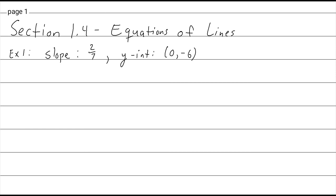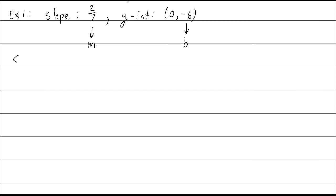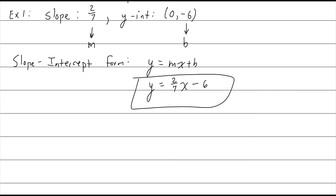Remember, slope is m, and when you have the y-intercept, the y-value of that point is b. So I have m and I have b. The equation of a line can be written in slope-intercept form, which is y = mx + b. I have m and I have b, so it's just a matter of putting it all together: y = 2/7 x + negative 6, which is just minus 6.